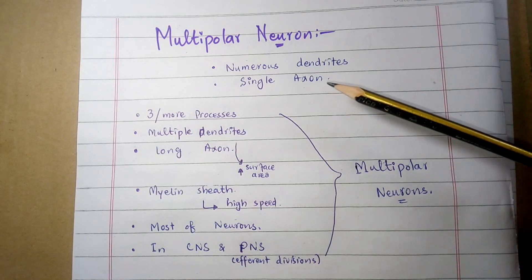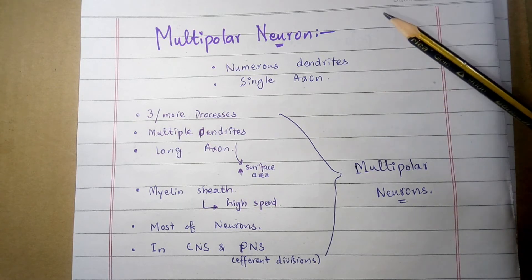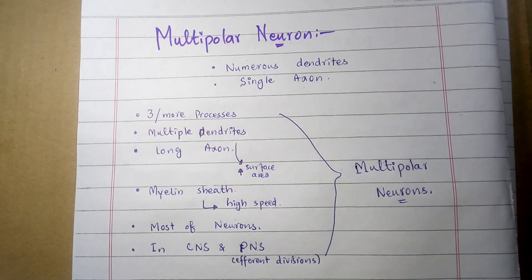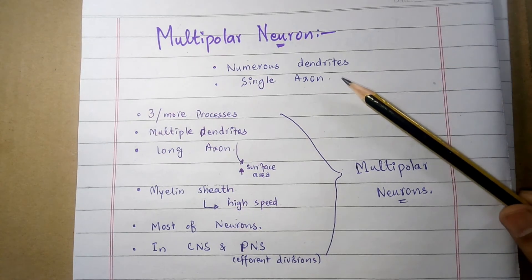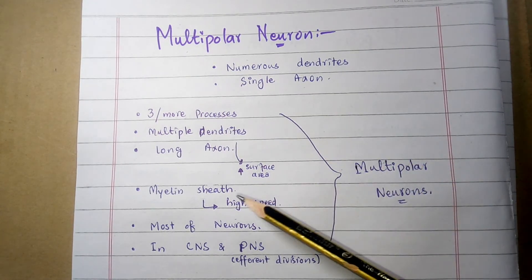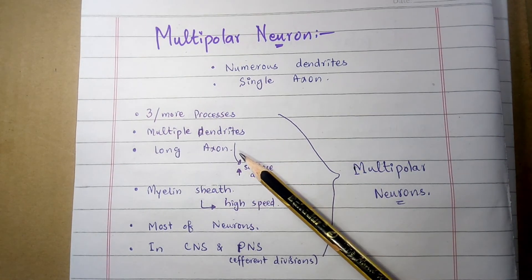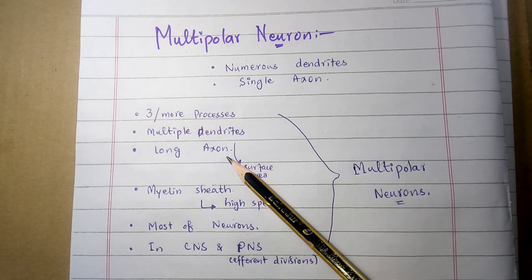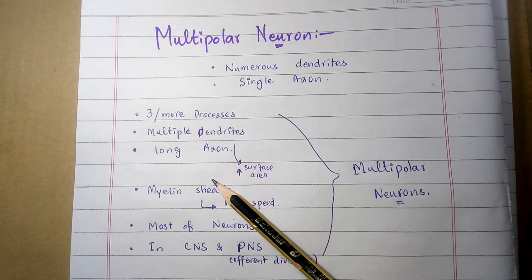Now moving toward the multipolar neuron, the third structural classification of the neuron. Multipolar neurons are special types of nerve cells characterized by having numerous dendrites and a single axon. They have three or more processes that extend out from the cell body. They have multiple dendrites and a very long axon.